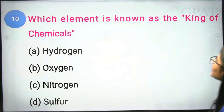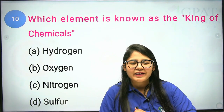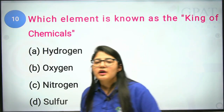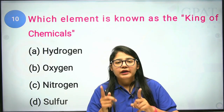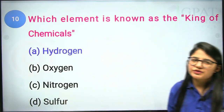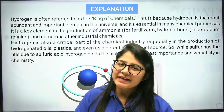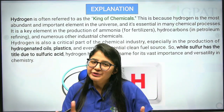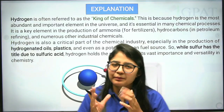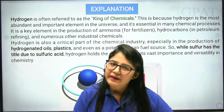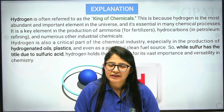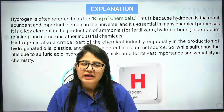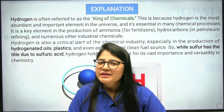The tenth question: which element is known as the king of chemicals? The correct answer is hydrogen, because whether gaining or losing an electron to complete a valency, each and everything depends on the hydrogen atom. So the correct answer is hydrogen. Those were today's 10 questions. Share with your friends so they can also practice, and comment whether you liked the session so we can continue. These 10 minutes will always clear your concepts and give you something new. Watch this session daily. Thank you everyone.